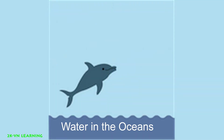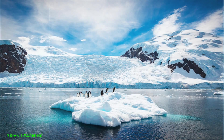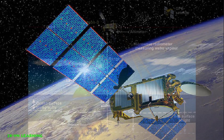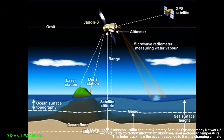Water in the oceans: as Earth's climate becomes warmer, land ice at the north and south poles starts melting. The water then flows into the ocean, causing sea level to rise. All of this — water in soil, water in the atmosphere, water everywhere — is measured using NASA's satellites.